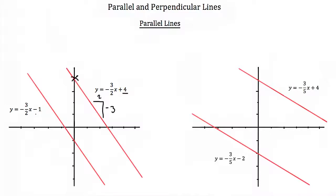Notice that our slopes are the same — the rise over run, or our slope, is negative 3 halves for both lines.